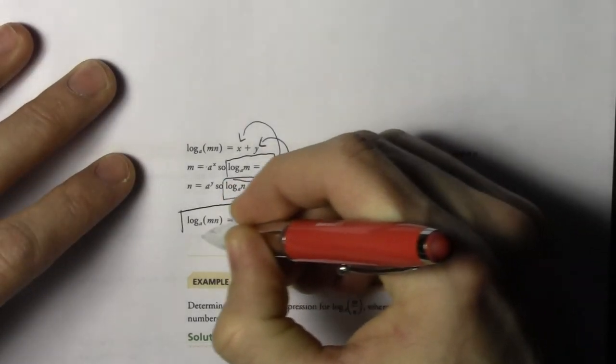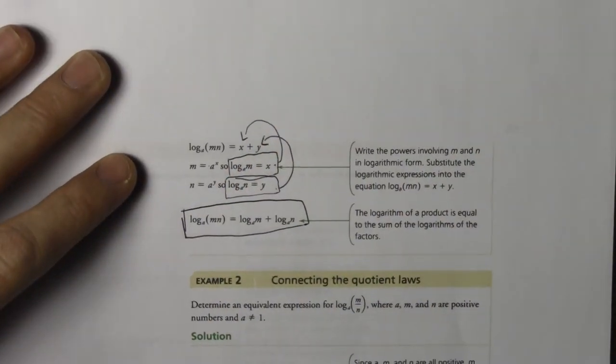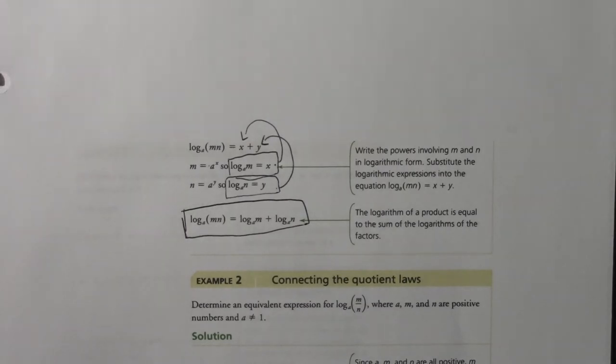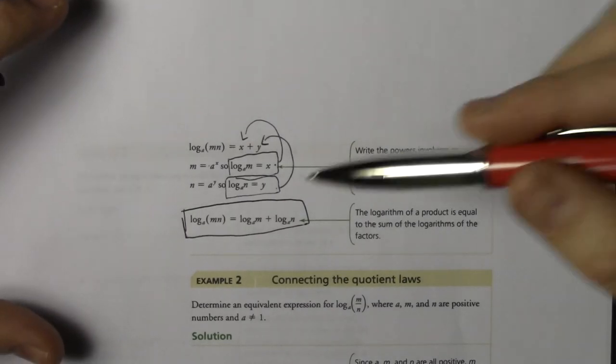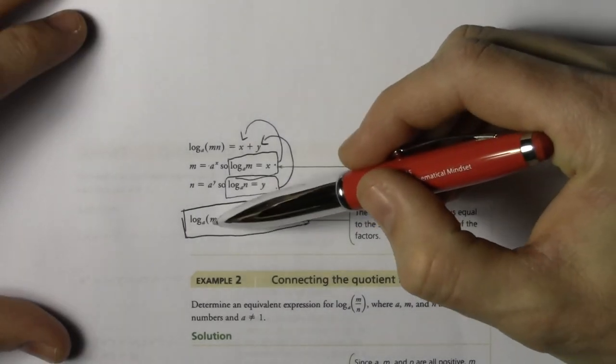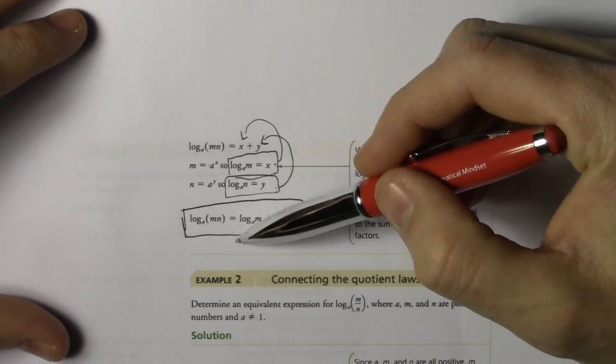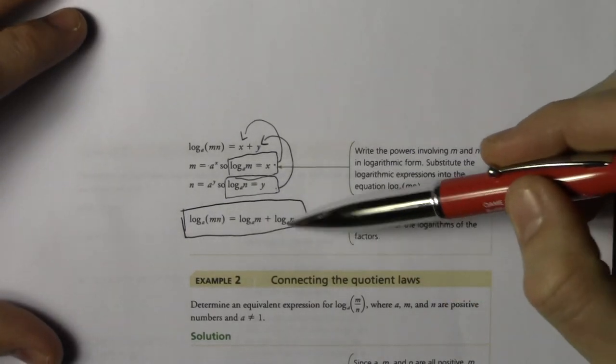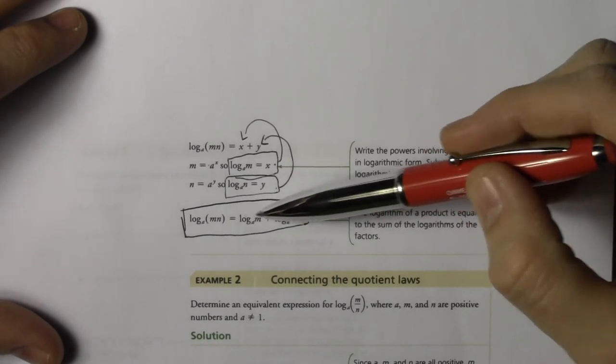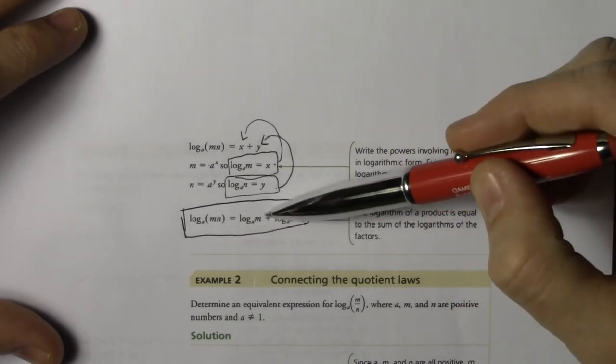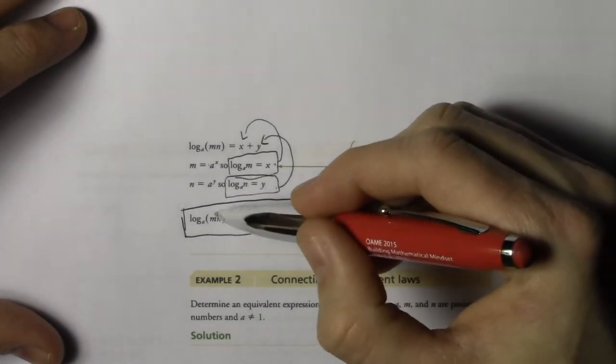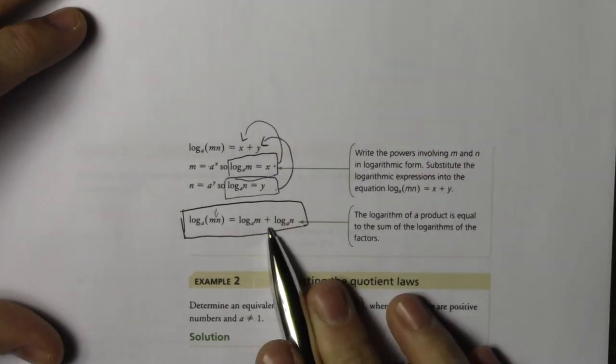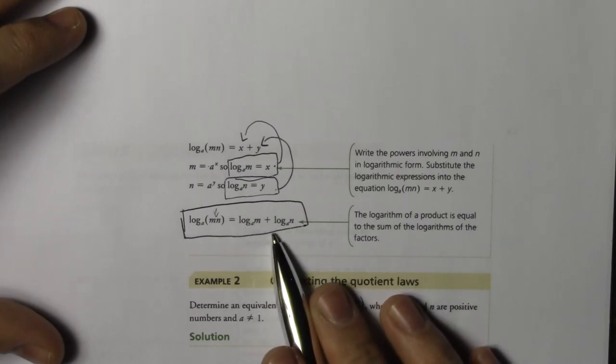So that's our law then. So if we're taking a logarithm of two numbers multiplied by each other, we can draw those two numbers out and take the log of both of those numbers separated by an addition. So inside the brackets, there's a multiplication. When you take those two values out, you separate them by addition, logging both the values. Okay? And you can check this on your calculator right now.